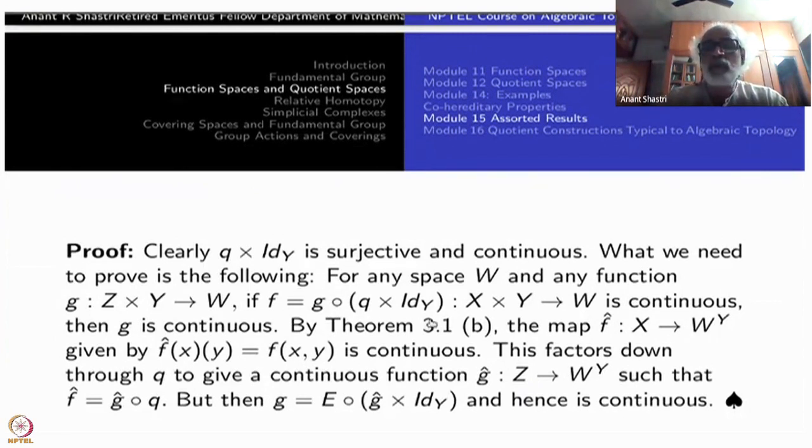What we need to prove is the following. The universal property we have to prove. So for any space W and any function Z × Y to W, if G composite Q × identity, say F equal to this one, is continuous, then G must be continuous.